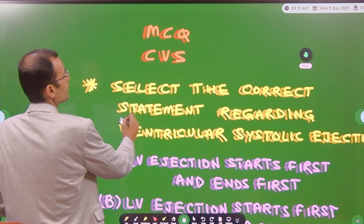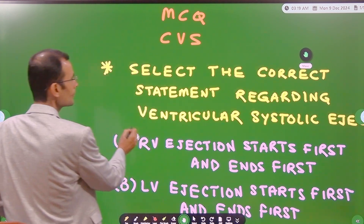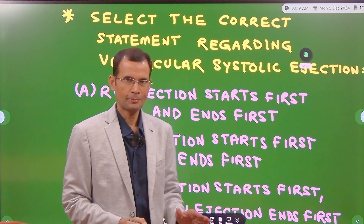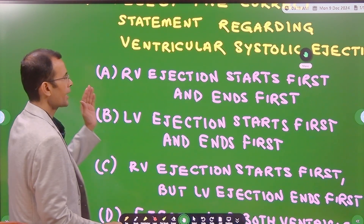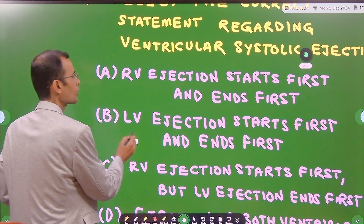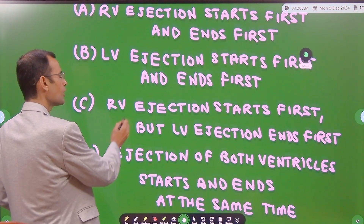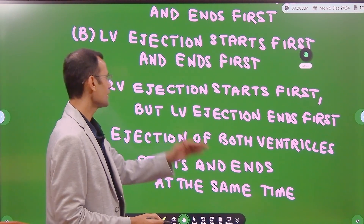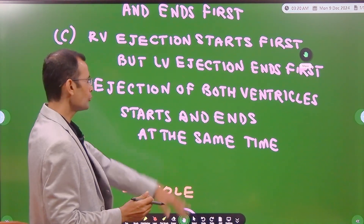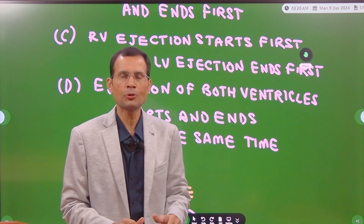The MCQ was on CVS and it requires a simple conceptual understanding. Select the correct statement regarding the ventricular systolic ejection. The options are: right ventricular ejection starts first and ends first; or left ventricular ejection starts first and ends first; or right ventricular ejection starts first but left ventricular ejection ends first; or ejection of both ventricles starts simultaneously and ends together.